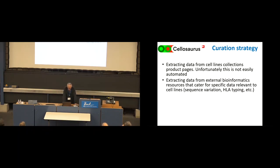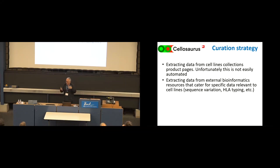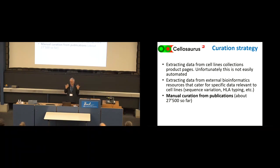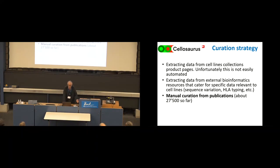The second channel is extracting data from other bioinformatic resources that have specific data fields of interest, because experiments were done on the cell lines and captured in those resources. That's much easier, because those resources are in bioinformatics and already know about standardization and protocols - there are generally APIs and ways to download data. You can get information like sequence variation, STR typing, and so on. But the biggest effort is taking papers - up to 27,000 now - reading the relevant parts and extracting what's useful for cell users. That's the biggest and most time-consuming task.